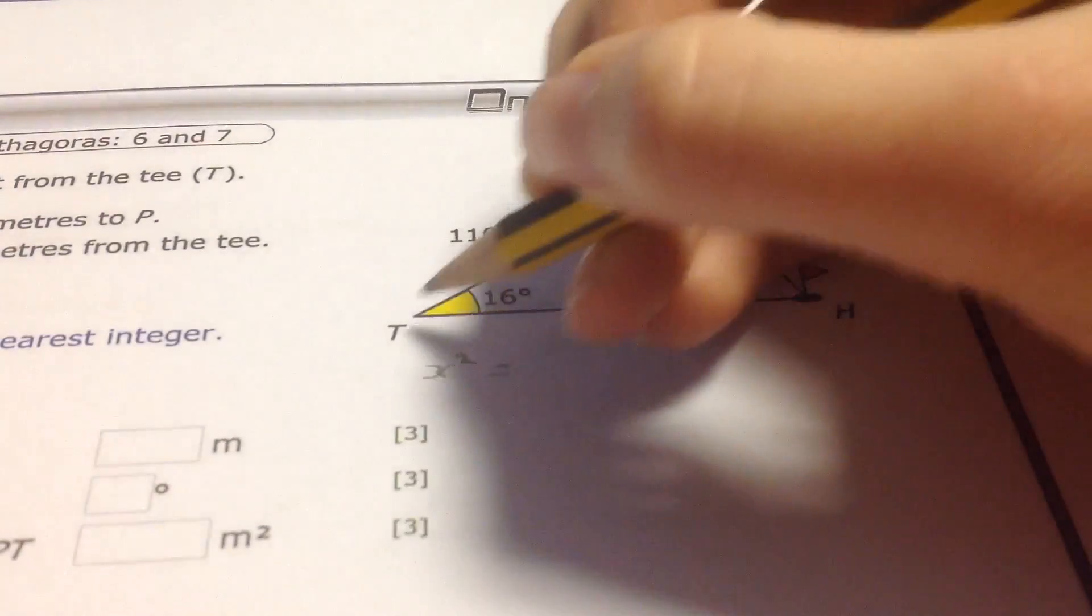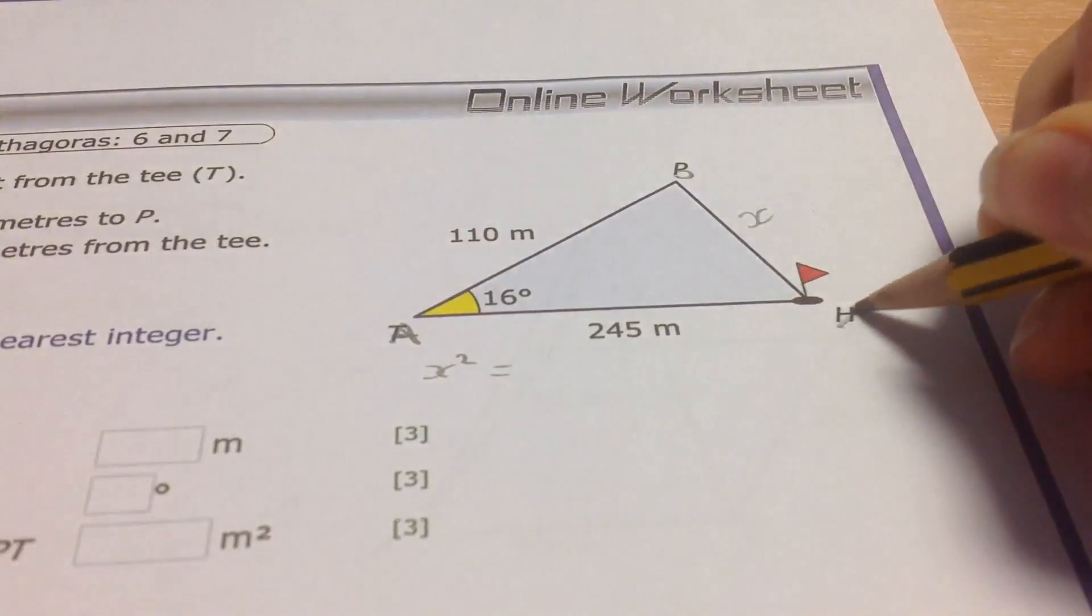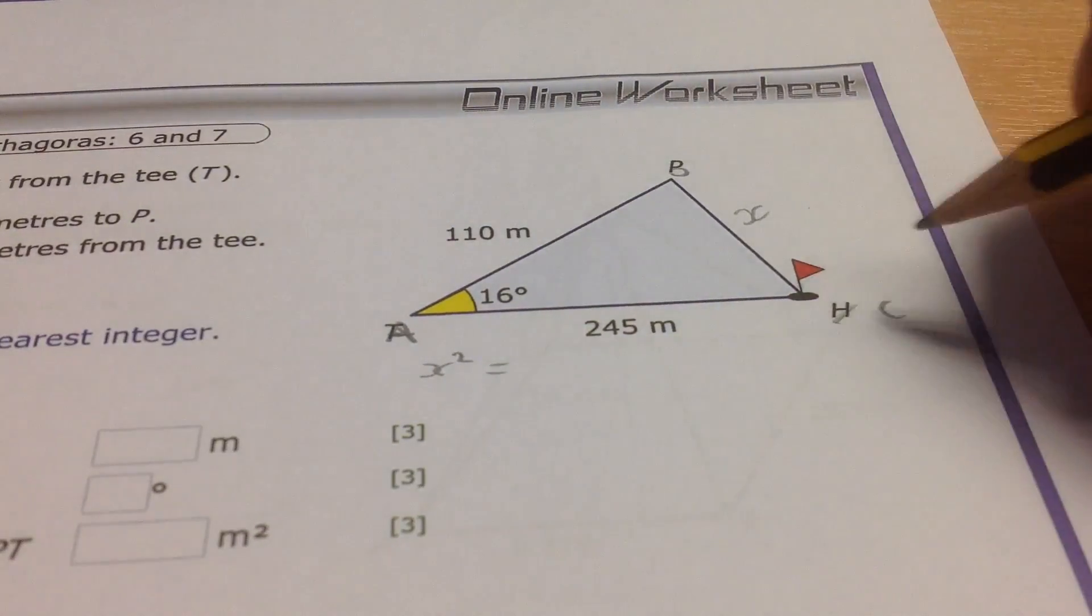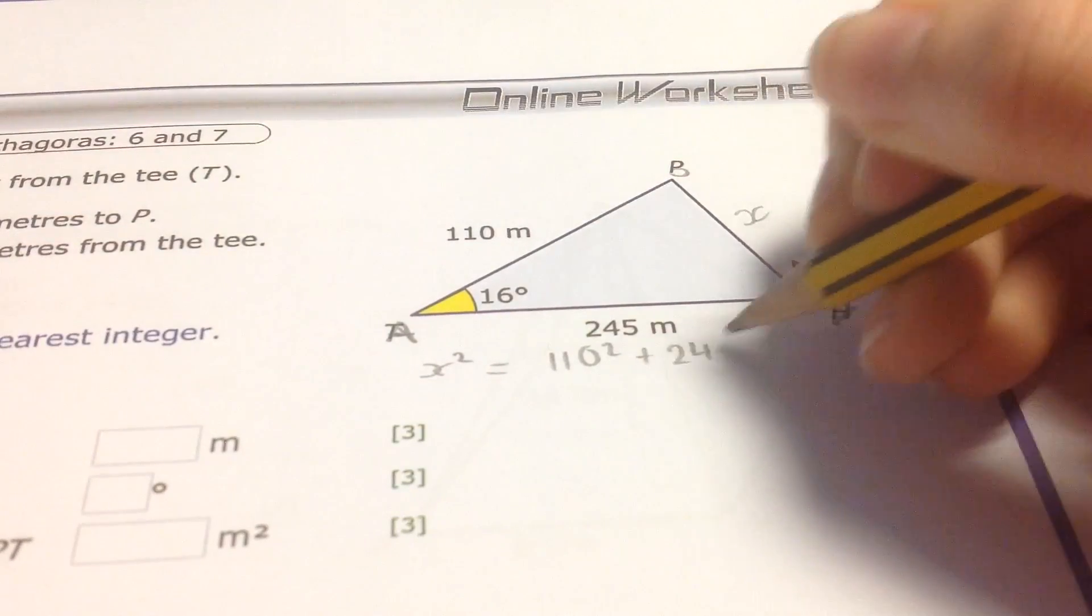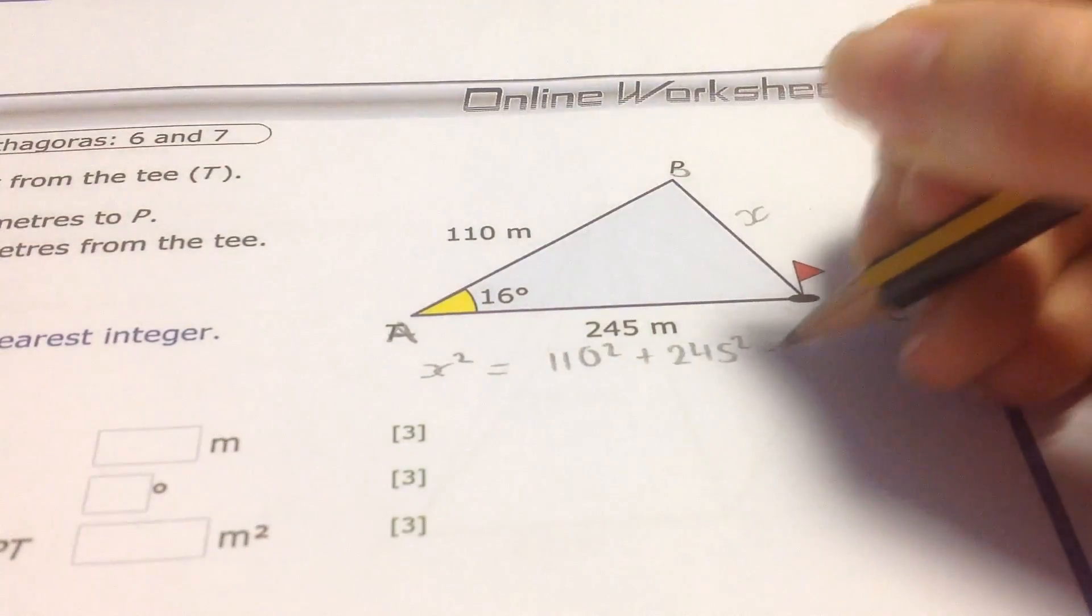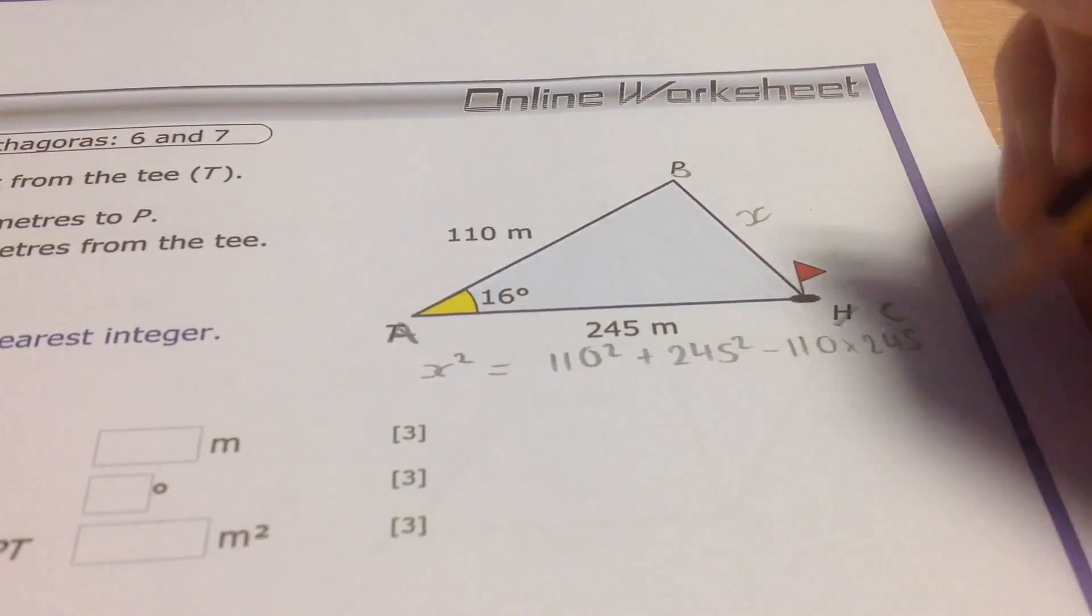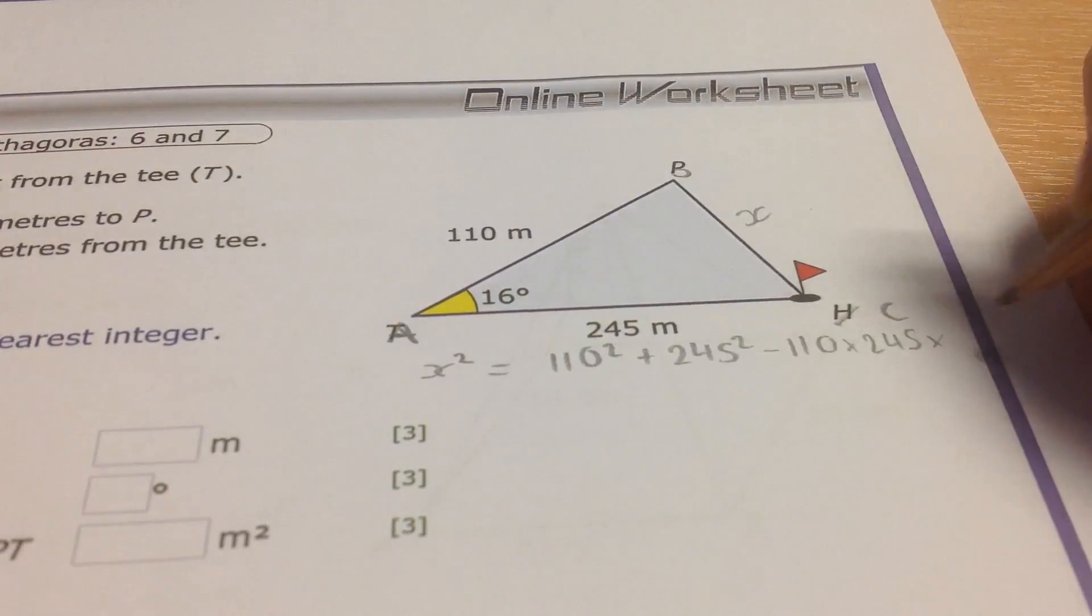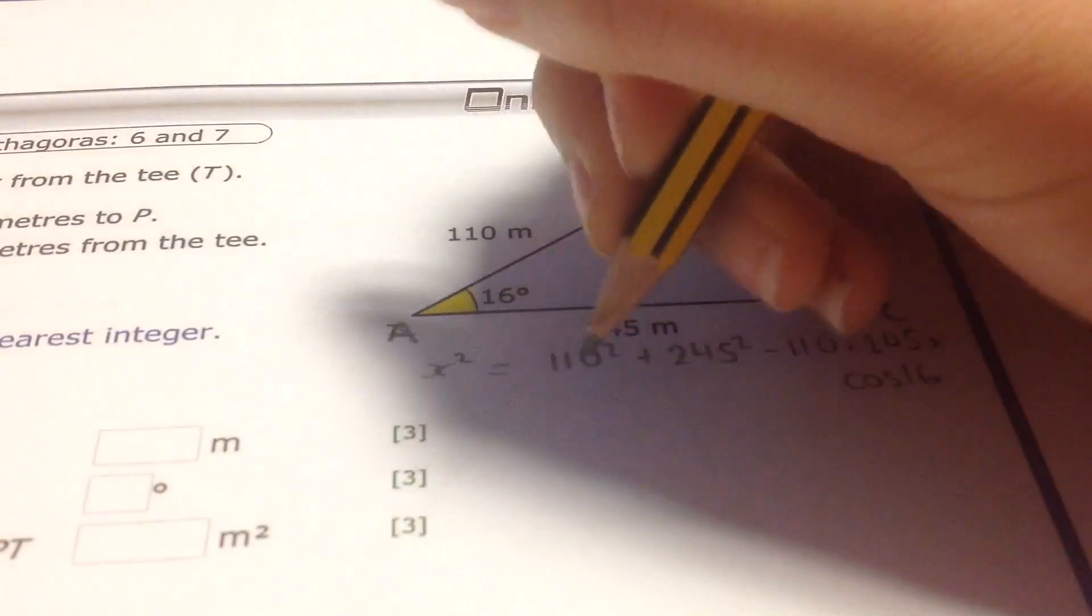I end up with X squared equals... So that would be my A, this would be A, that would be C. 110 squared plus 245 squared minus 110 times 245 times cos 16. And you put that into your calculator